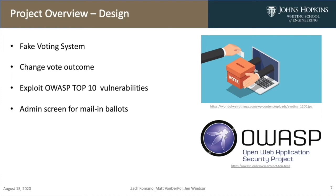Everyone's at home and they don't want to go to the polling station and risk getting COVID. The goal of the attacker is to go in and change the outcome of the election. In order to do that, they're going to have to exploit some of the OWASP Top 10 vulnerabilities — the top 10 vulnerabilities that occur in web or cloud applications. After exploiting these vulnerabilities, the attacker will be granted access to an admin screen where they can log votes from fake mail-in ballots.